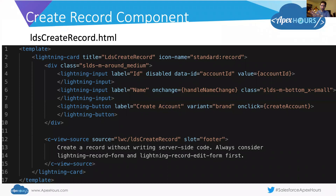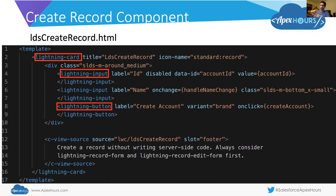Here's our LDS create record component. First thing we see is a template tag — just like all Visualforce pages start with apex:page, all Lightning Web Components start with the standard HTML template tag. We see some other lightning tags: lightning:card, and then some lightning:input fields and a lightning:button. The first lightning:input is the ID field that's disabled. The second lightning:input is the name field we were typing into. Then we have the lightning:button that lets us do something when we click it.